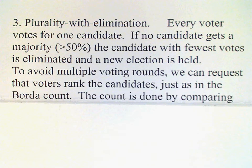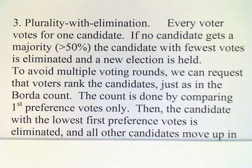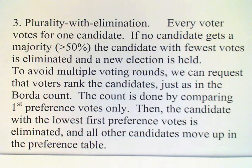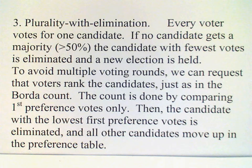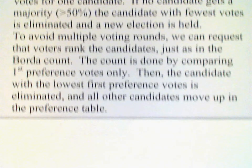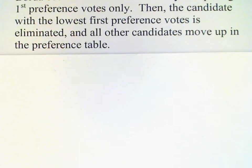What we prefer to do is have the voters rank all the candidates in the first place, just as we do with the Borda count. That gives us a preference table. We start by looking only at the first preference votes. If one candidate has a majority of first preference votes, that candidate is declared the winner. If not, we eliminate the candidate with the lowest number of first preference votes and move the others up in that column.